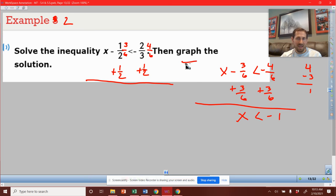And then it does ask you to graph. So we're going to take our number line. We'll put a 0. We'll put negative 1. Open dot. This says x is less than negative 1. So we are going to shade everything over here.